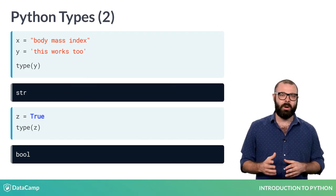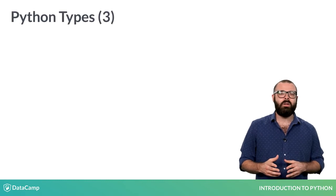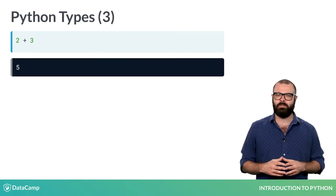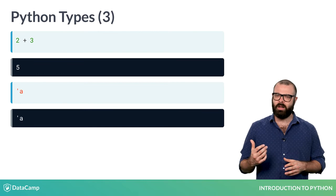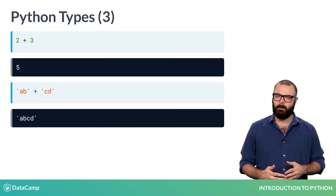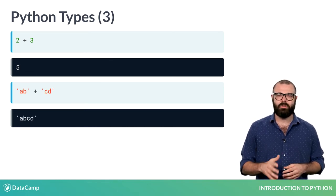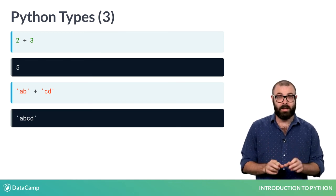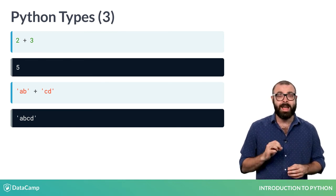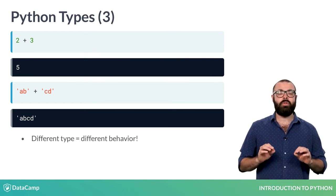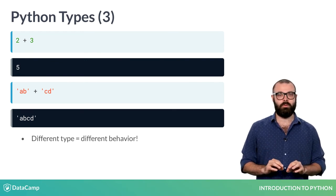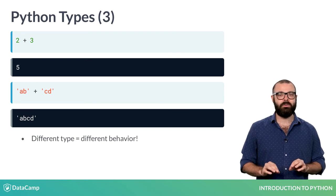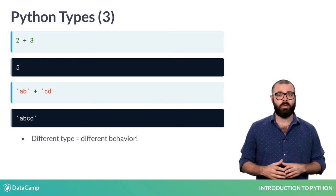There's something special about Python data types. Have a look at this line of code that sums two integers and then this line of code that sums two strings. For the integers, the values were summed. While for the strings, the strings were pasted together. The plus operator behaved differently for different data types. This is a general principle. How the code behaves depends on the types you're working with.